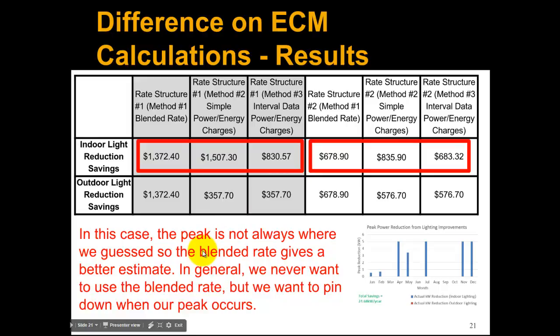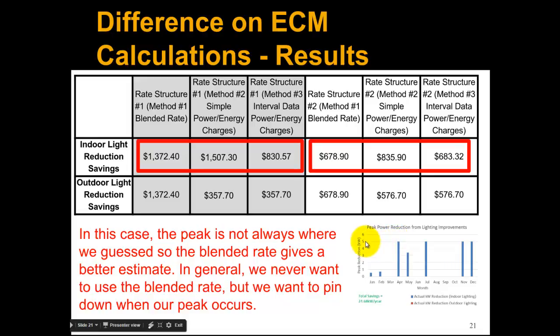In some cases the peak is not always where we guessed it, so the blended rate can actually give a better estimate than method two. We need to be careful that if something occurs just a portion of midday, we probably want to be careful about the estimates we use — and if we have interval data, just take the time to calculate in Excel. In general, if you have interval data, which most buildings do now, go ahead and do the real calculation with the interval data instead of estimating, because that's really going to give you the best estimate of your building cost savings. Thanks for listening.